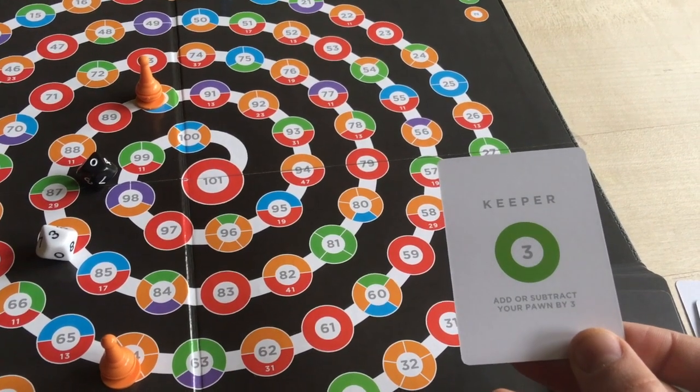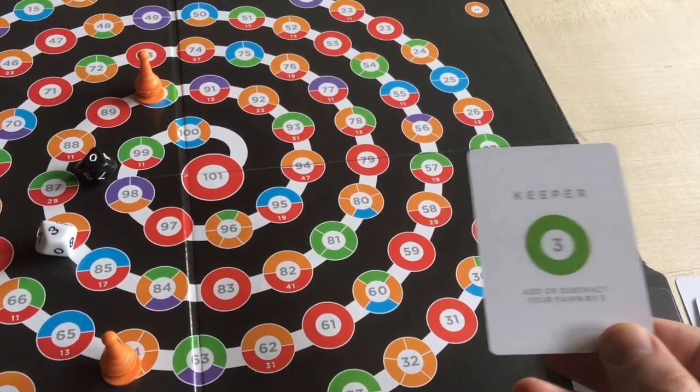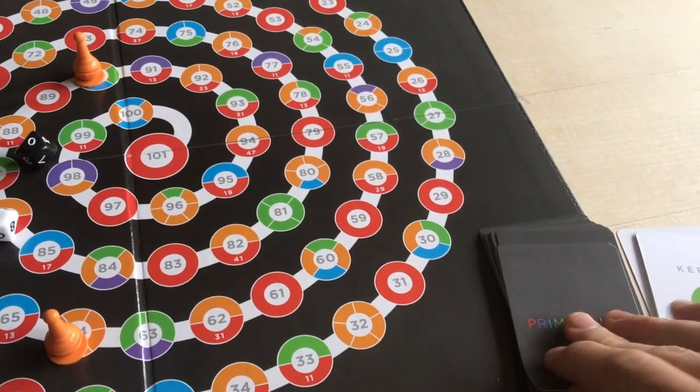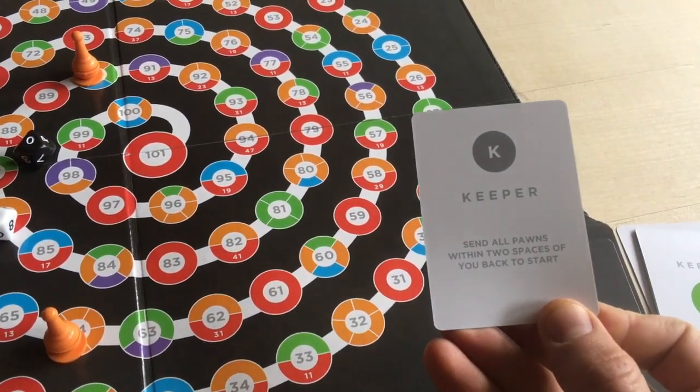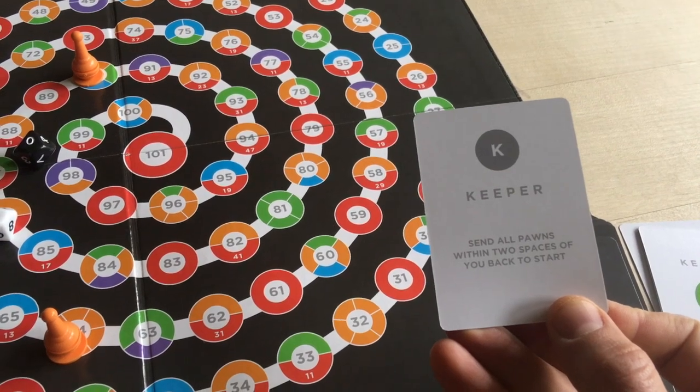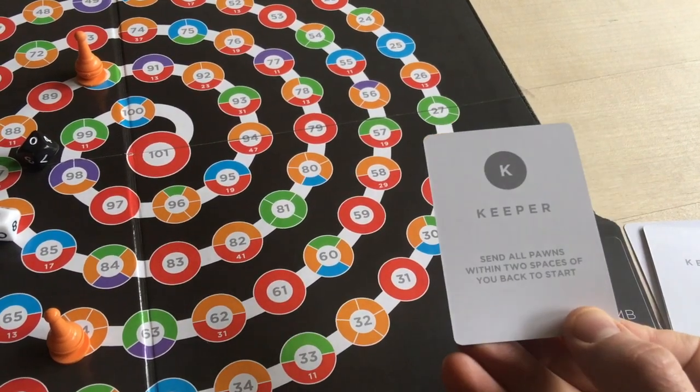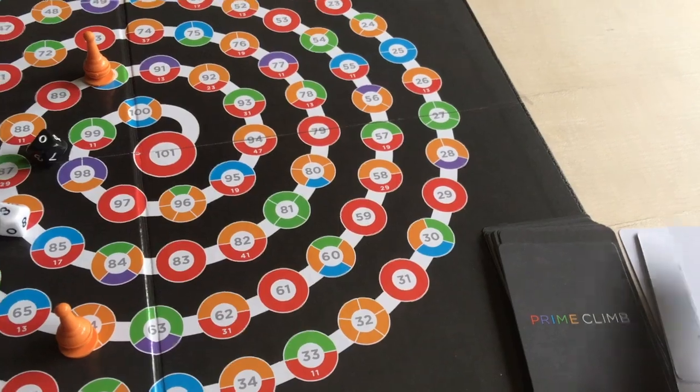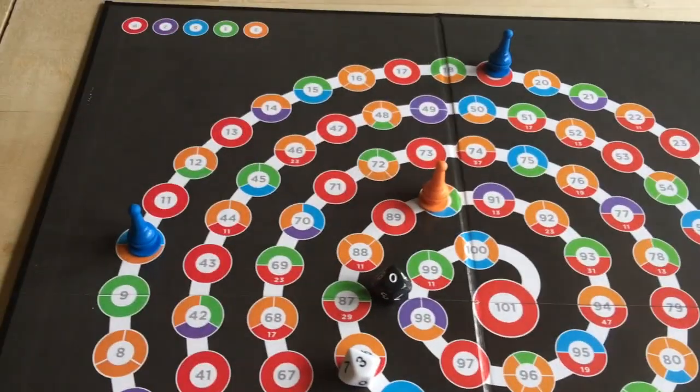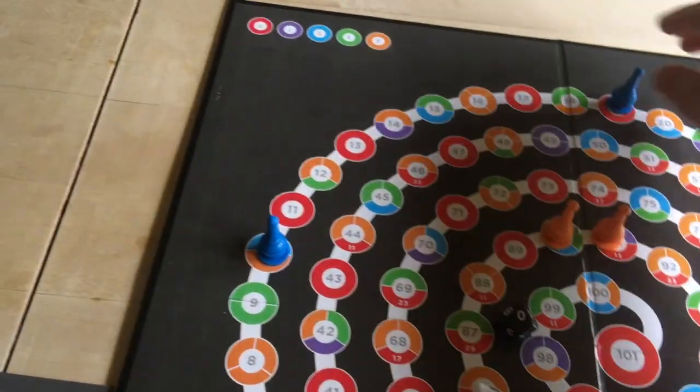These can be very powerful and helpful to allow you even more possibilities to win the game. This one, for example, lets you add or subtract your pawn by three. It's almost like having an extra die roll. This one lets you send all pawns within two spaces of you back to start. You get to keep it and time it so you move right into the thick of another player, then send them back to start.